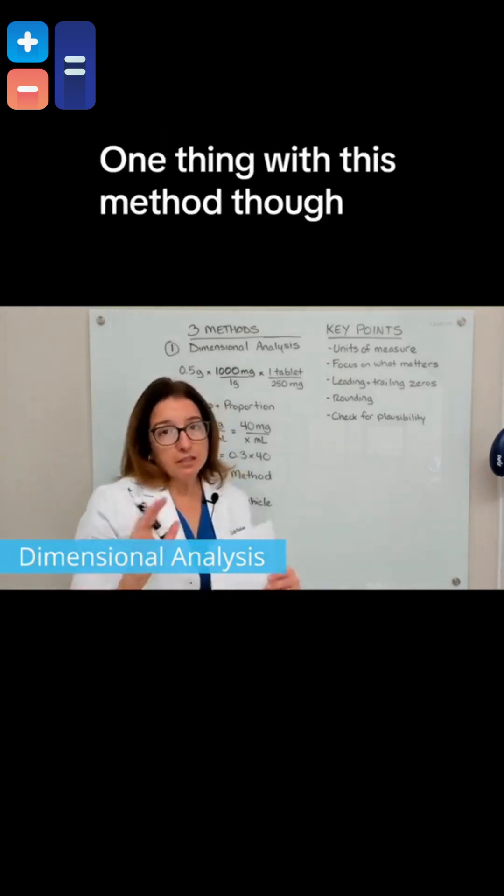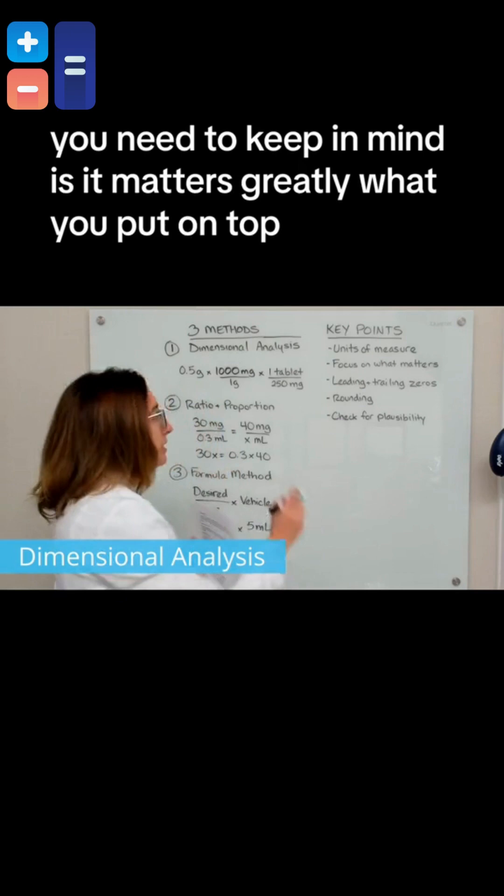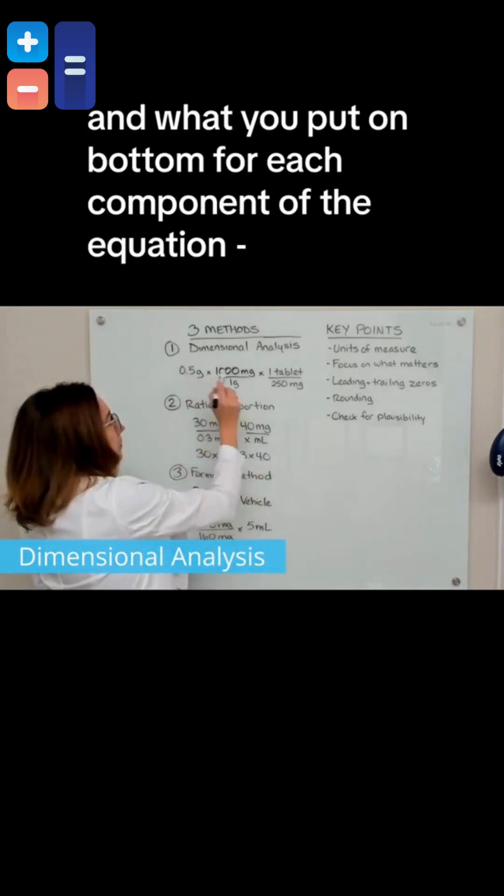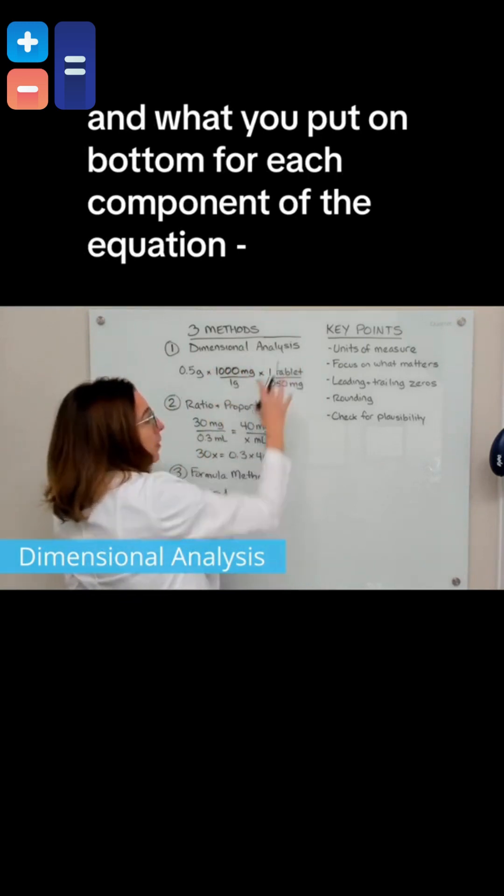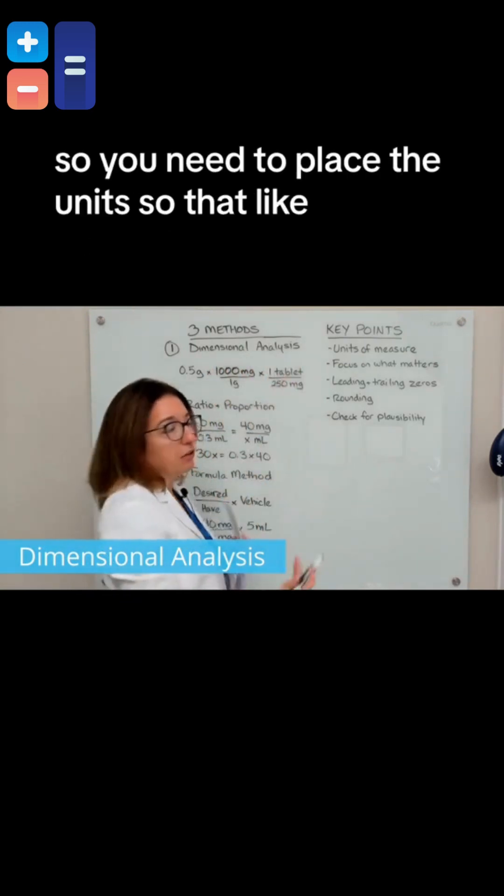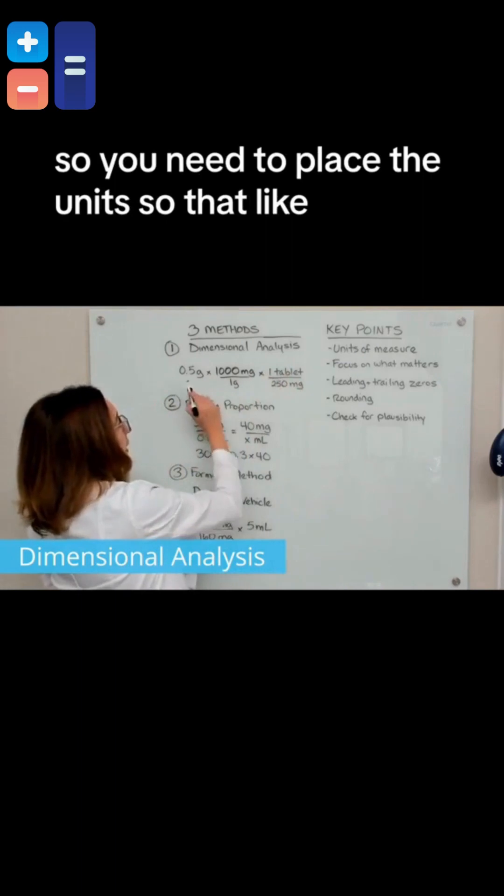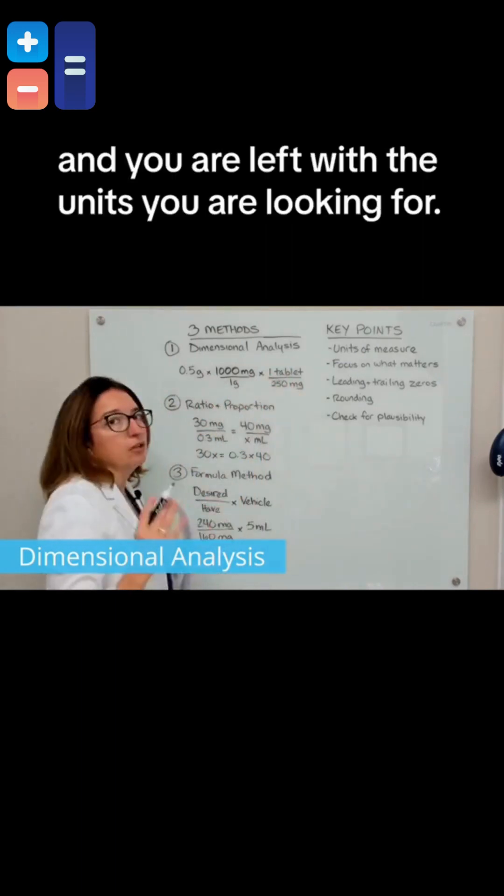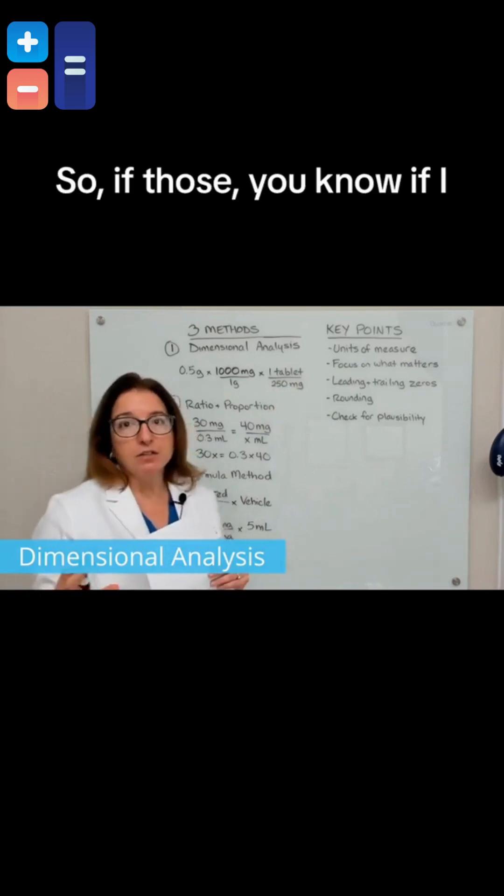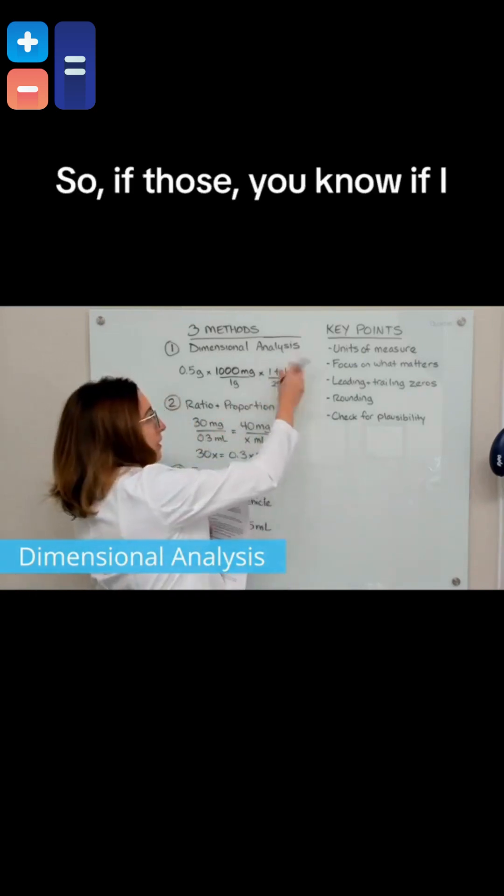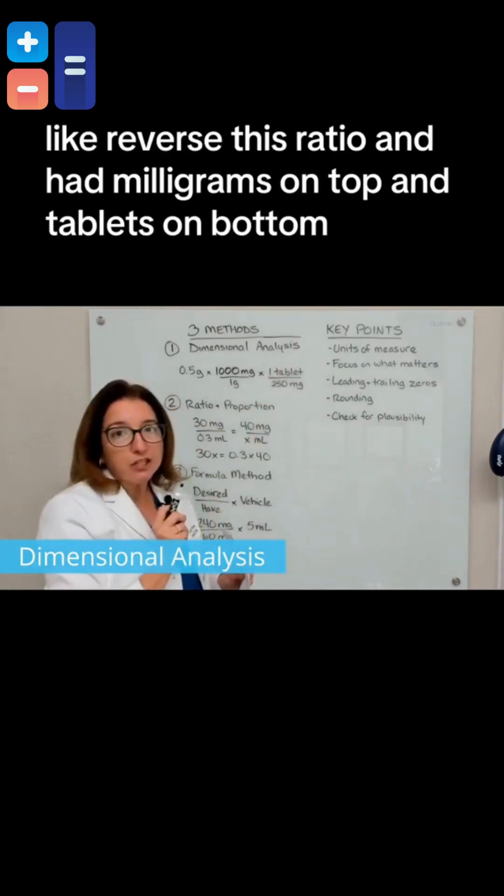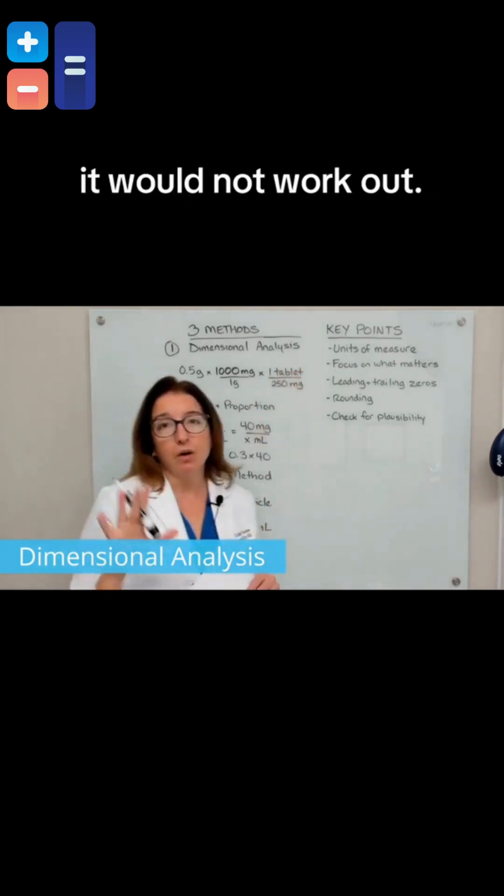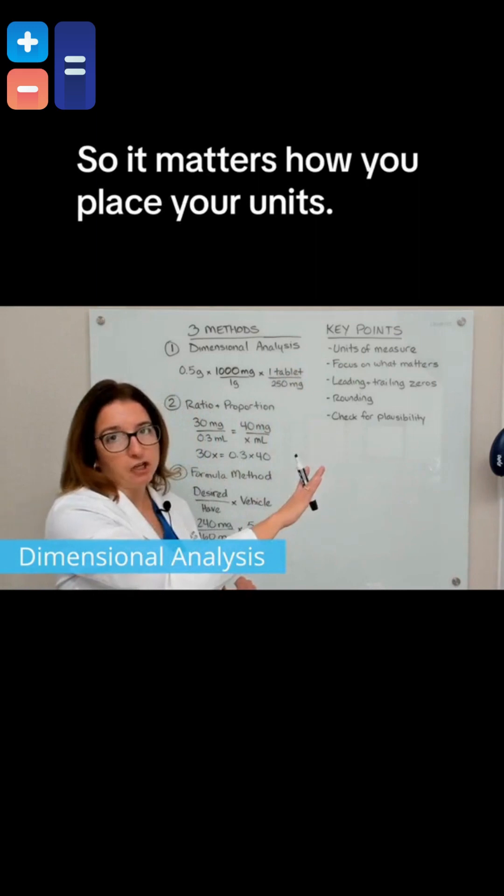One thing with this method you need to keep in mind is it matters greatly what you put on top and what you put on bottom for each component of the equation. You need to place the units so that like units cross off and you are left with the units you are looking for. If I reverse this ratio and had milligrams on top and tablets on bottom, it would not work out. So it matters how you place your units.